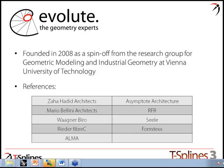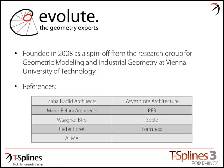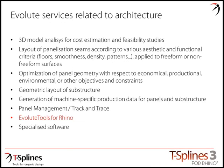Hey everyone, this is Florin from Evolute. The company was founded in 2008 as a spin-off from the research group on Geometric Modeling and Industrial Geometry at the Vienna University of Technology. We have been working on some really cool projects over the years, mainly from architects like Zaha Hadid, Mario Bellini Architects, Wakna Bureau, Asymptote Architecture, RFR, Sealy, Formtex, and Alma. Our services are related to geometric consultancy for architectural surfaces.